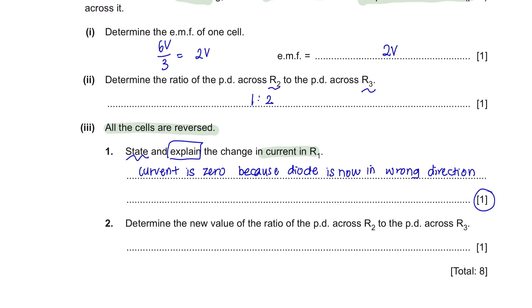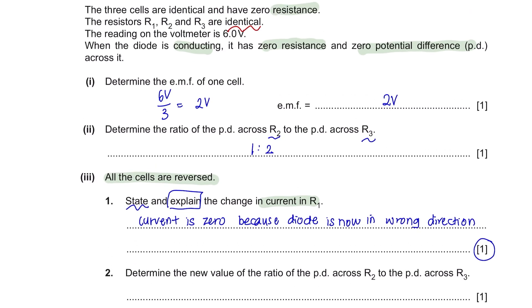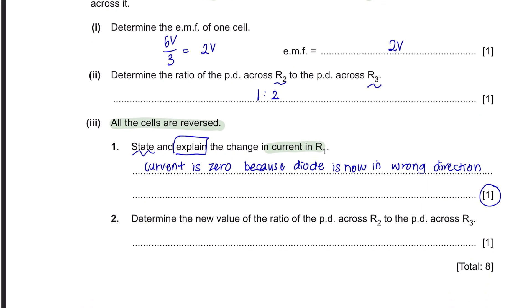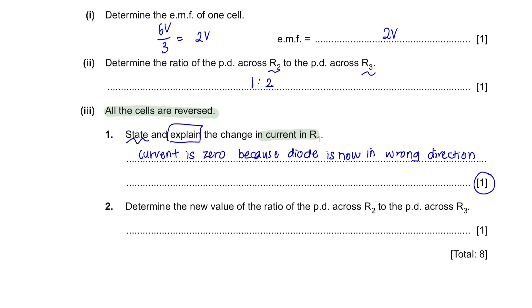And question 2: Determine the new value of the ratio of the potential difference across R2 to the potential difference across R3. Going back to our circuit, now that the cells are reversed, there will be no current flowing through R1, meaning that no voltage will pass through R1. The new path for voltage would only go through R3 and R2 and then back to complete the circuit. R3 and R2 are now placed in a series circuit. We know that the voltage across the series circuit remains same. So 6 volts here and also 6 volts here. So the new value for the ratio for potential difference across R2 to R3 is 6 volts to 6 volts, which can be simplified to 1 to 1.